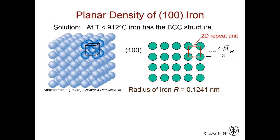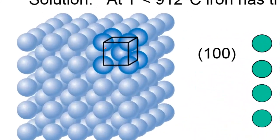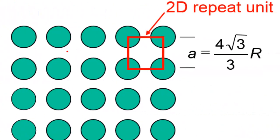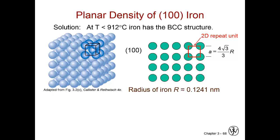We have a BCC structure, and we want to calculate the planar density of the (100) plane in iron. The BCC structure shows that the body-centered atom does not allow the other corner atoms to touch each other — they're spaced apart, so they might have a different density than a different plane would. Here's our two-dimensional repeat unit; we don't consider the body-centered atom because it's shielded from this plane. Side A equals 4√3/3 multiplied by the radius. The radius of iron is 0.1241 nanometers.